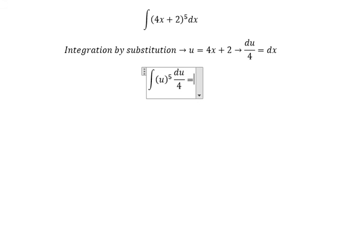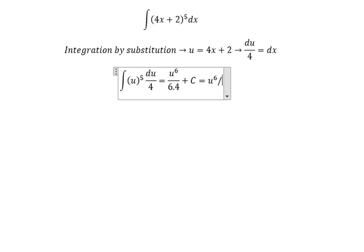And now we can get u to the power of 6 over 6 multiplied by 4, plus C. That's u to the power of 6 over 24 plus C.